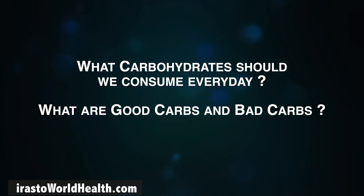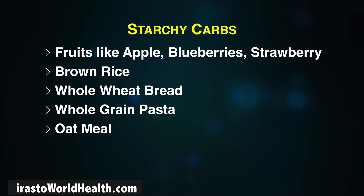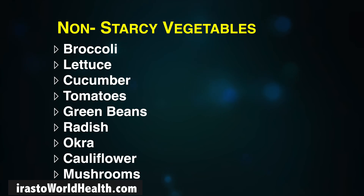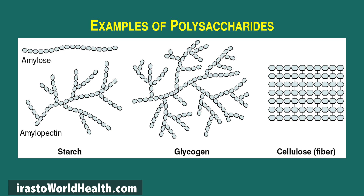What carbohydrates should we consume every day, and what are good carbs and bad carbs? We should always choose complex carbohydrates, which are long-chain polysaccharides that have a lot of fiber, are unprocessed, and take a long time to digest. A few of these are displayed. If you look at the structure of polysaccharides, starch is composed of many glucose units.